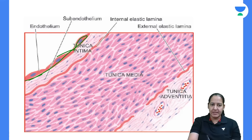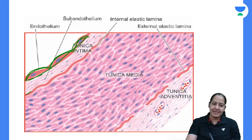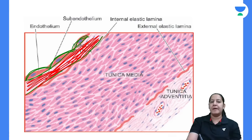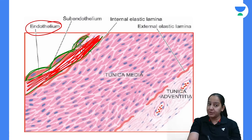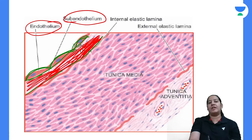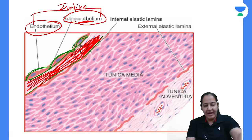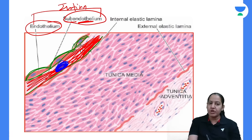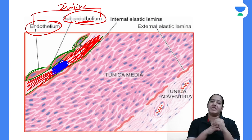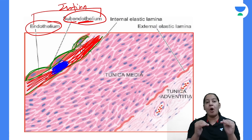In the tunica intima, two things are present. Everyone knows that endothelial cells are there, but just below the endothelial cells there is subendothelial tissue. Both together constitute the intima. The subendothelial layer of the intima is important because atherosclerosis forms here — it is a disease of the subendothelial layer of the intima.